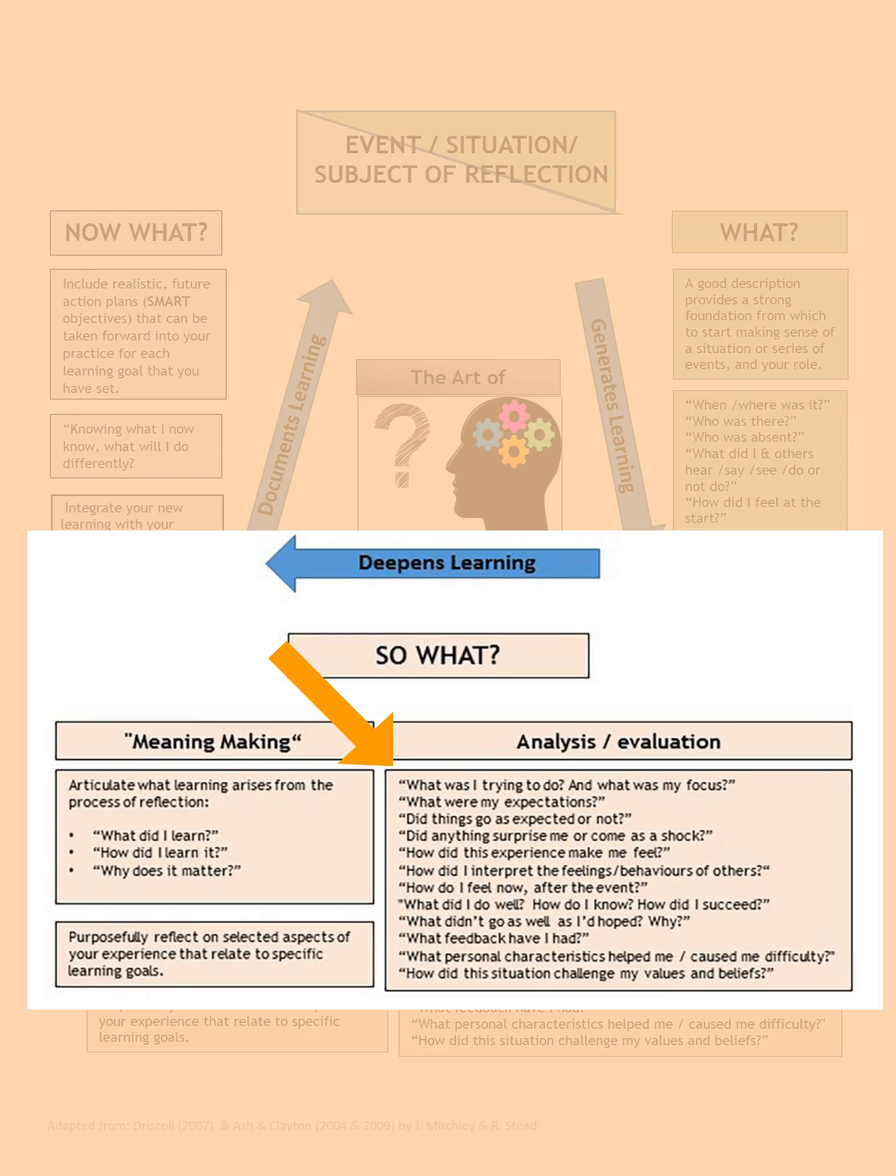It could come from peers, from mentors, from tutors, from friends. Important also to explore personal characteristics that you have, your personality, your values perhaps that help you or helped you in the event to succeed or perhaps caused you some difficulty because this will be important in order to make actions to improve for next time.